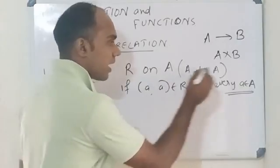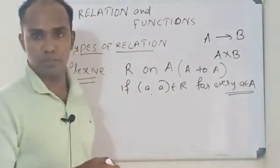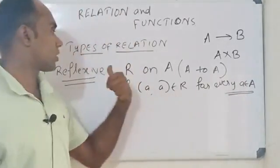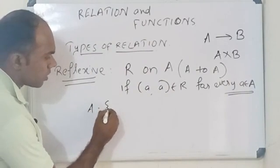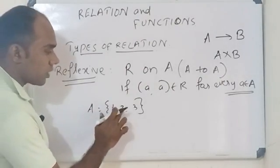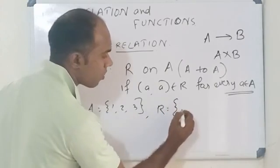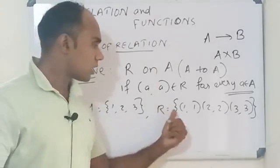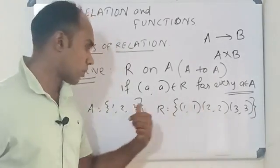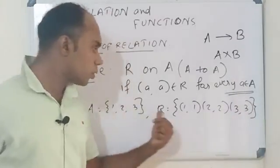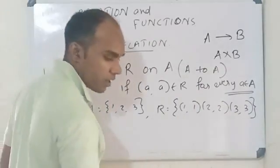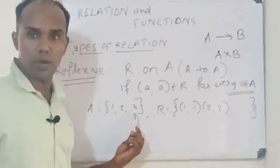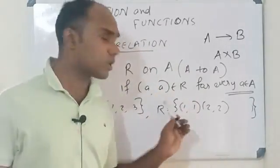If (a, a) are the same, this is called a reflexive relation. For example, I have a set with elements 1, 2, 3. The relations include (1,1), (2,2), (3,3). This set contains (1,1), (2,2), (3,3), which is straight into the diagonal pairs. It is reflexive because all the required conditions are satisfied.